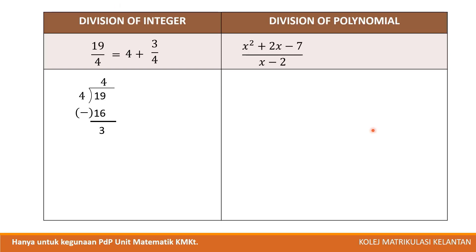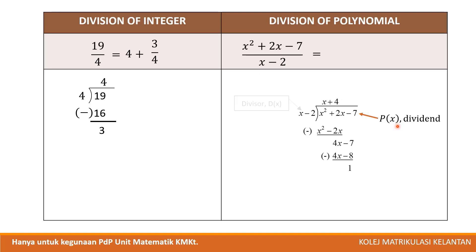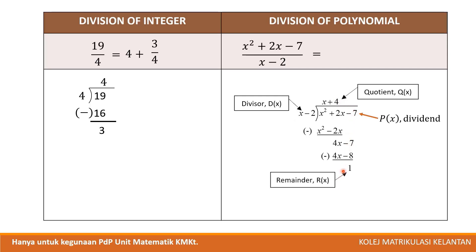If we want to divide polynomials, it is the same concept. There are three important components: p(x) the dividend, d(x) the divisor, q(x) the quotient, and r(x) the remainder. After long division, write the answer as the quotient q(x) plus the remainder over the divisor.